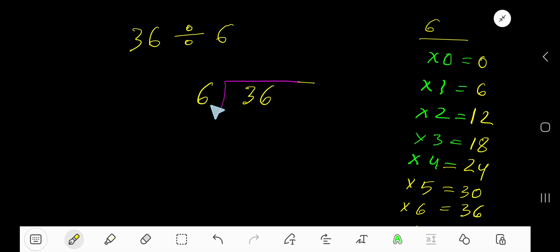So 6 goes into this 3 how many times? Actually 3 is less than 6, so 0 times. 0 times 6 is 0. If you subtract you are getting 3. Bring down this 6.